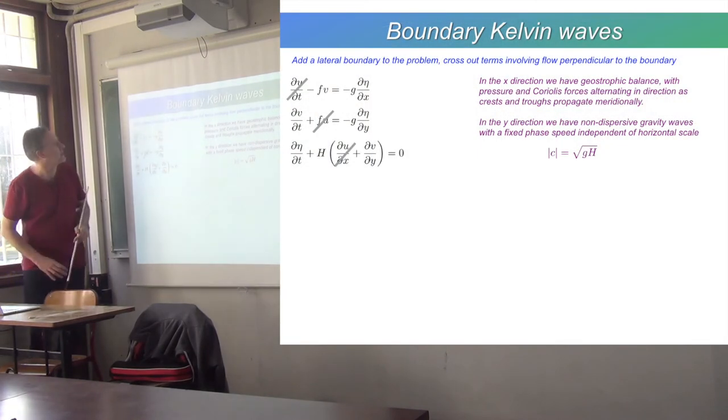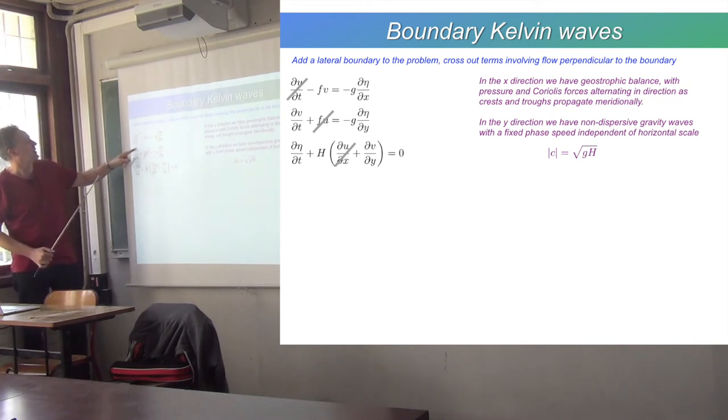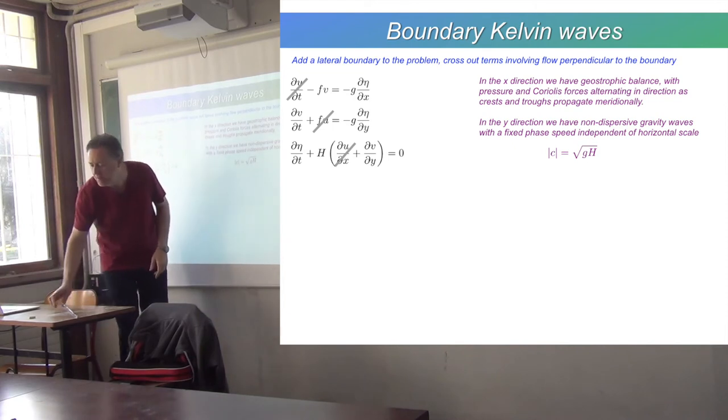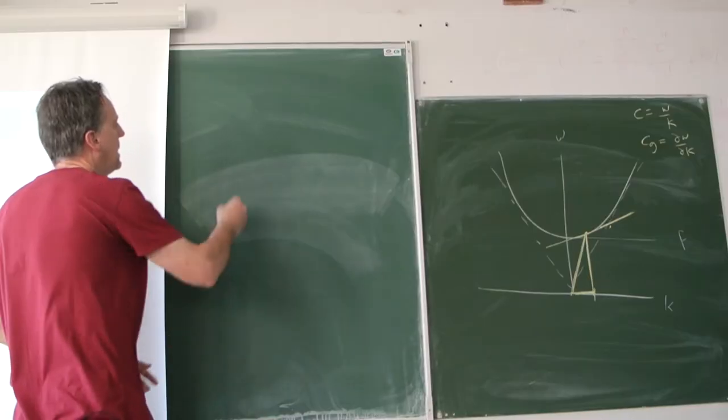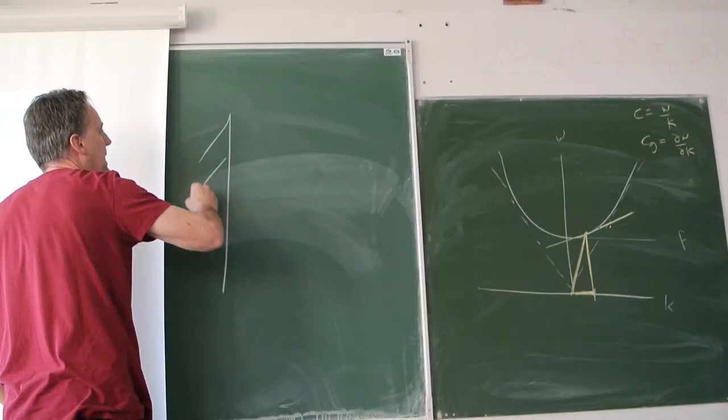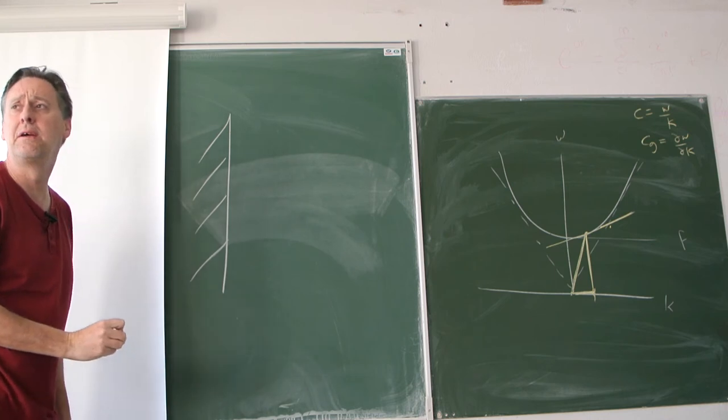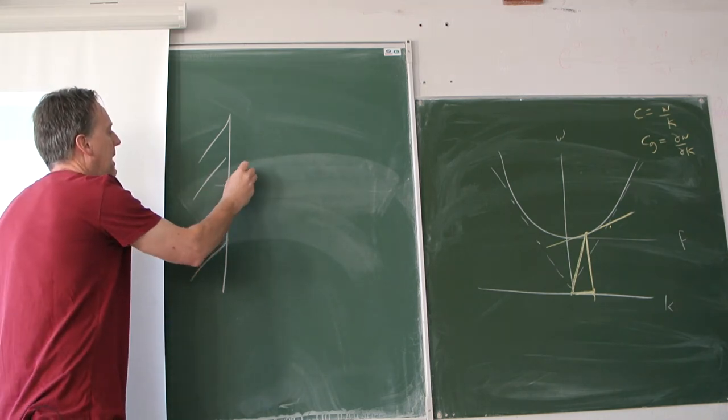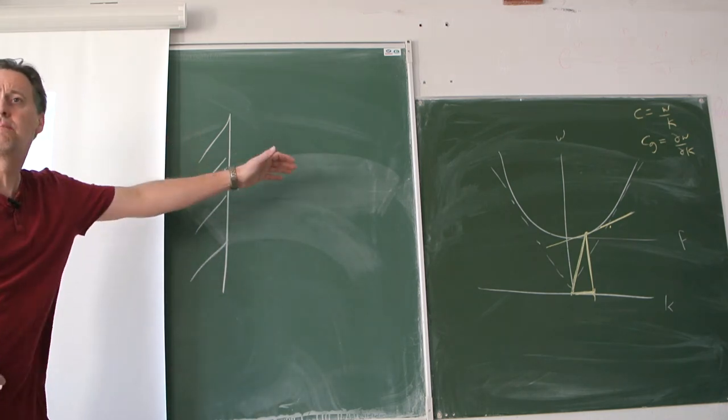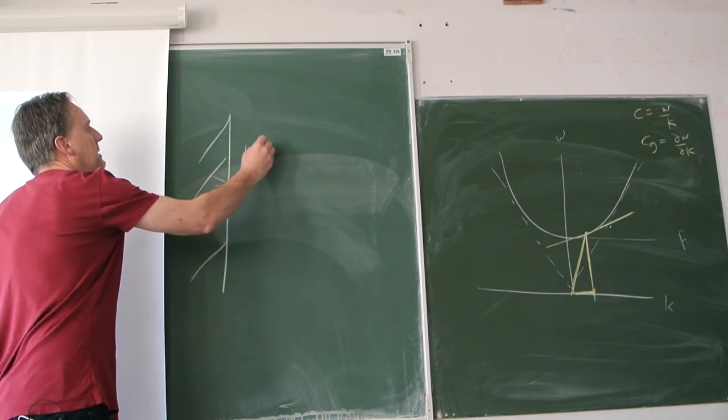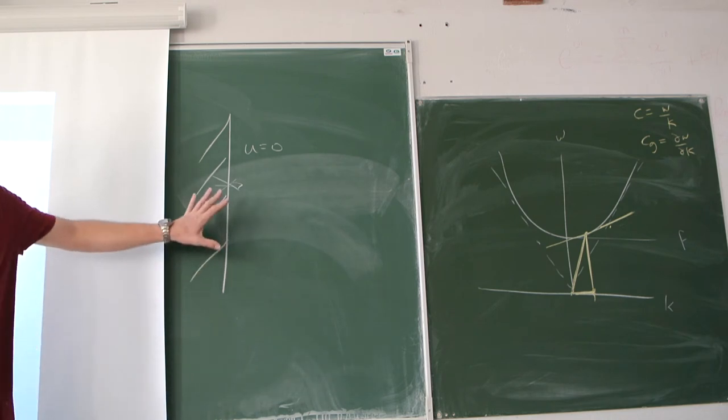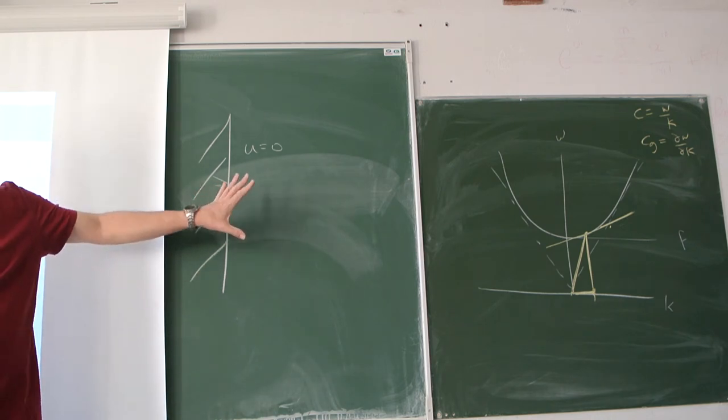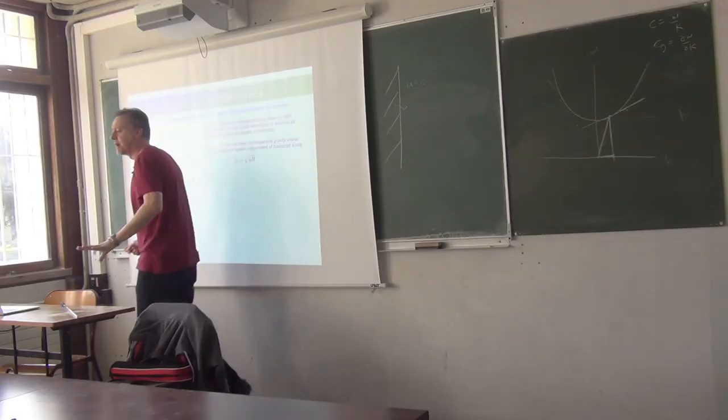What I've done here is cross out terms involving zonal flow, so it's like I'm adding a boundary in a north-south direction. I've got here's my ocean, there's a boundary here, and so on this boundary you can't have any flow across that boundary. So near that boundary, u is equal to zero. Does that change the behavior of gravity waves in a rotating system?